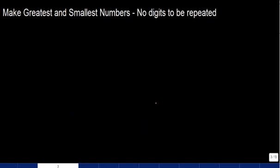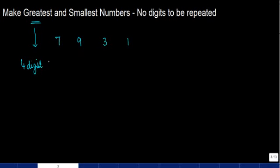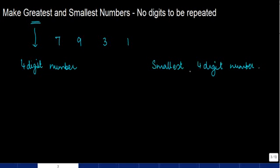Make the greatest and smallest numbers — no digits to be repeated. What does this mean? Let's say you have certain digits, and I'll take four of them: seven, nine, three, and one. I tell you to make the greatest four-digit number and the smallest four-digit number. The condition is that none of these digits are to be repeated — if I have to make a four-digit number, I can use each digit only once.